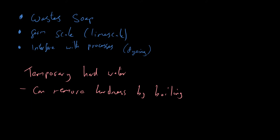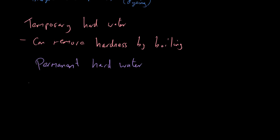The other type is known as permanent hard water. The names are a bit misleading because even though it says permanent, we can soften permanent hard water. We just say permanent with regards to whether it can be softened by boiling — permanent hard water cannot be softened by boiling. There are other methods we use instead.